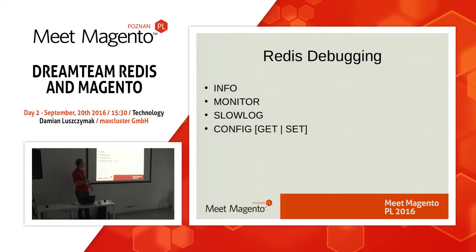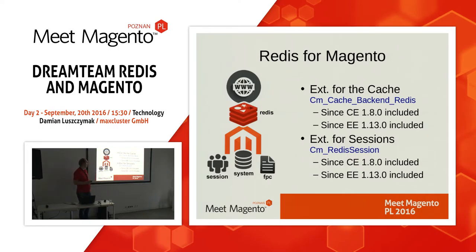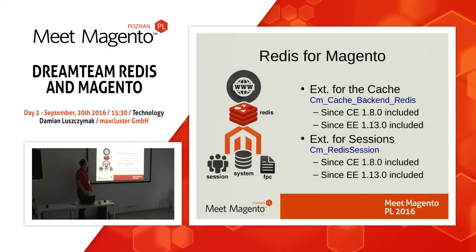For debugging Redis: info, monitor, slowlog — it's the same as MySQL. The Magento Redis extension is the cache backend from Colin, included in Magento since version 1.8. I would suggest you go to GitHub and always get the latest version — there are some small adjustments. There was a problem about a year ago with Magento, PHP 5.6, and FPM — some crazy behavior with sessions. Hopefully you know how to install the extension with ModMan, because it's really easy.